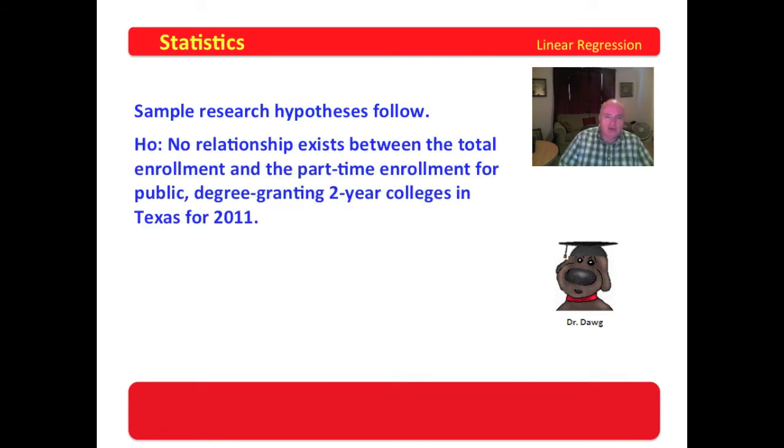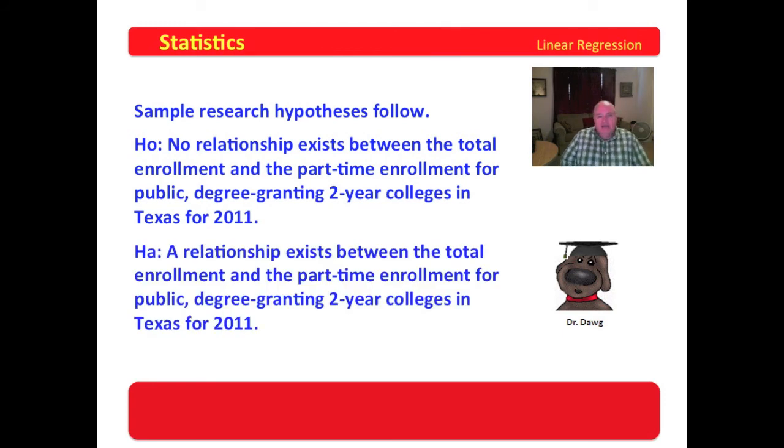Now, here's some sample research hypotheses. So your null hypothesis is that no relationship exists. And your alternate is that a relationship exists. That's not very complex, is it?